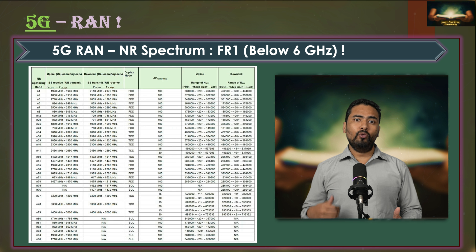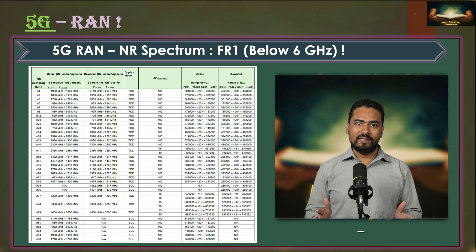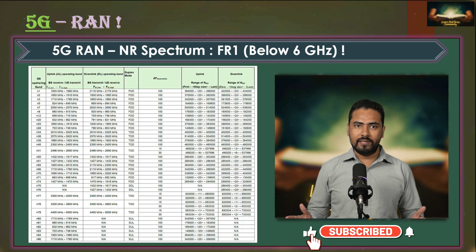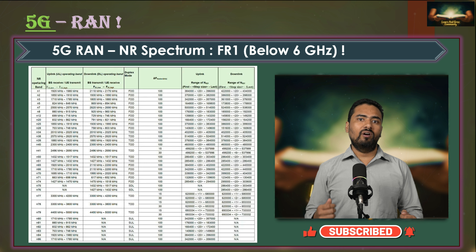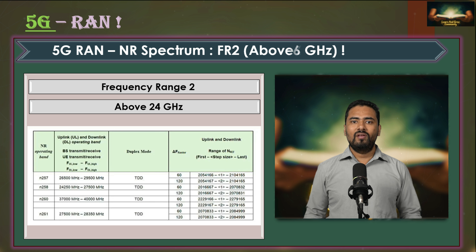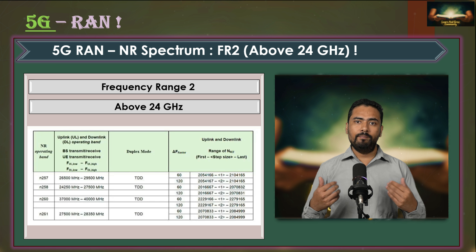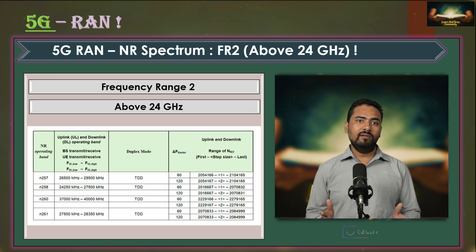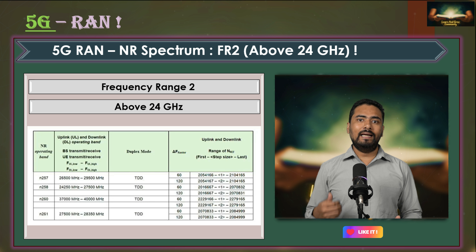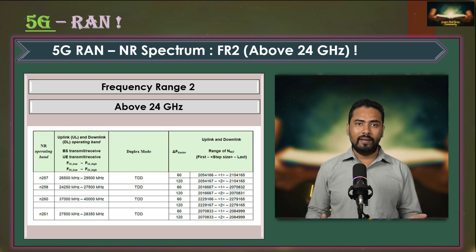Bands in Frequency Range 1 have lower frequencies which provide better propagation characteristics, making them ideal for coverage from macro base stations. Frequency Range 2 covers bands above 24 GHz and can offer channel bandwidths between 50 MHz to 400 MHz.